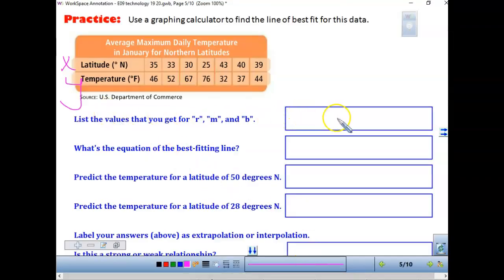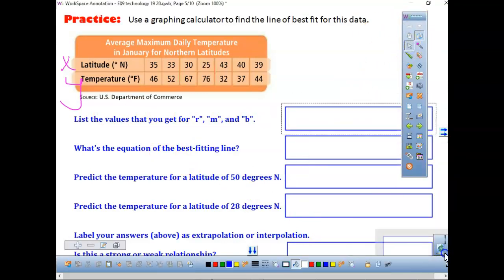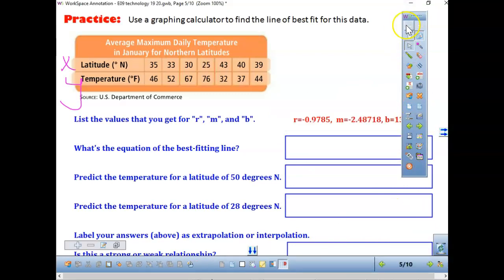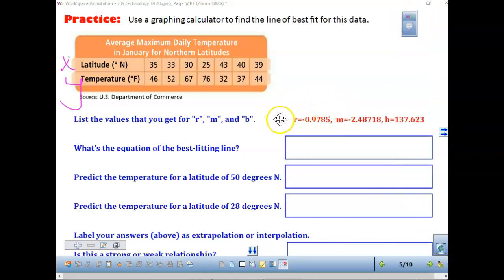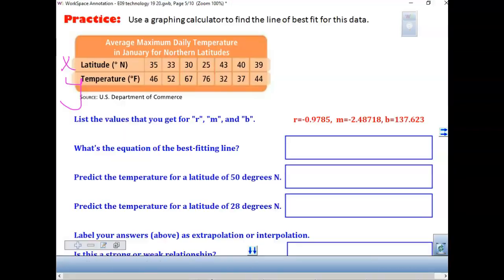You are going to type in the latitude is going to be your x. Temperature is your y. You are going to type that into your computer right now. So what is your r, your m, and your b? The r is negative 0.9765. What is the slope? Negative 2.48718. What is the b, the y-intercept? 137.623. All of these came right off of the Desmos calculator.